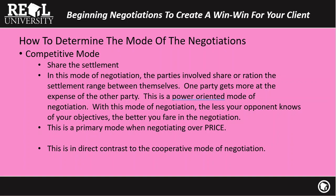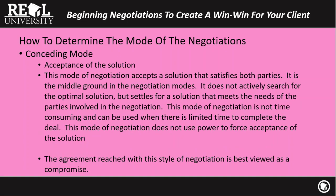The problem with the competitive mode is this: by definition, it's a win-lose proposition. The only way for someone to pay less — i.e., win — means the seller accepts less, and that would be seen as a loss. The conceding mode is a method where one party allows the other party to have an acceptance. This typically happens when something is not as important to one party as it is to the other.